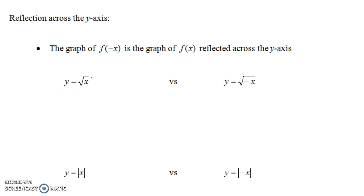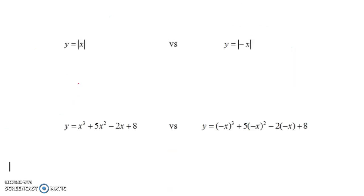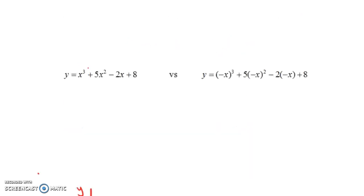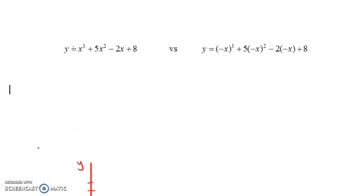For example, if you take y equals the square root of x and replace x with negative x, you get y equals the square root of −x. That's the same graph as the original, only reflected across the y-axis. Or y equals the absolute value of x versus y equals the absolute value of −x — same graph, only reflected across the y-axis.